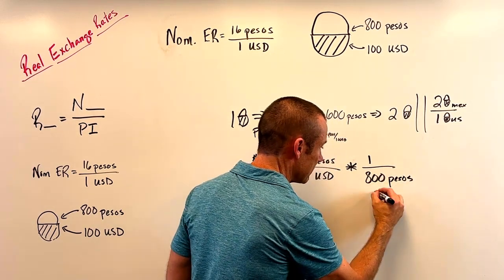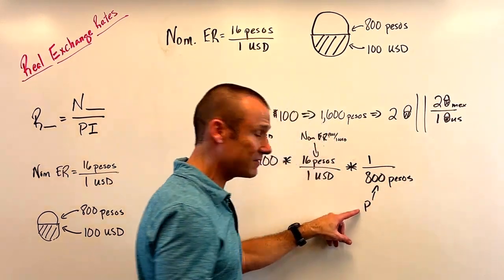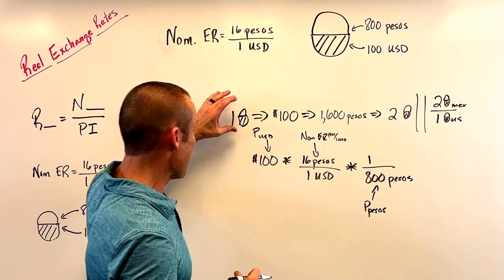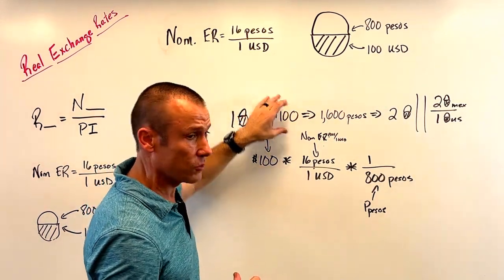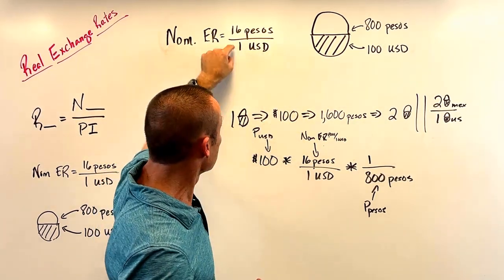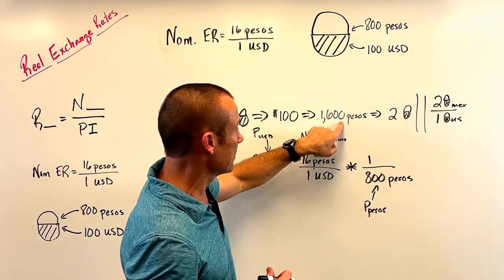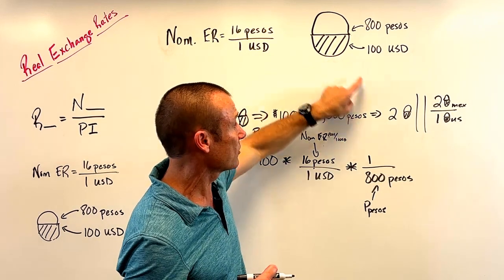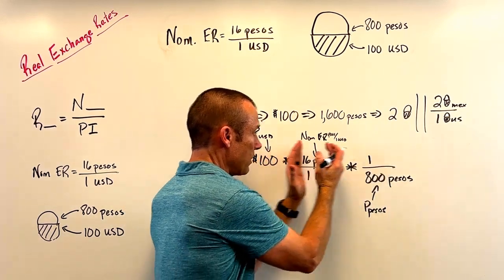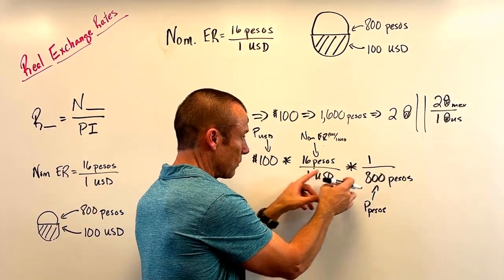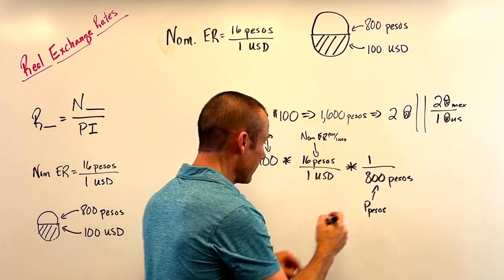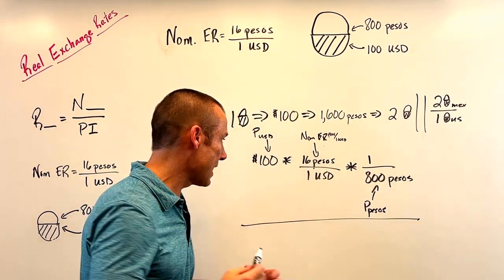Then we multiplied by one over 800 pesos — that was the price of the same exact market basket in pesos. I had a market basket, sold it in the United States for $100 USD, went to the exchange market and exchanged at the nominal rate to get 1,600 pesos, then bought as much of that market basket as I could — which was two. So: 100 × (16/1) × (1/800) = 2. That's the formula you'll come across in textbooks.